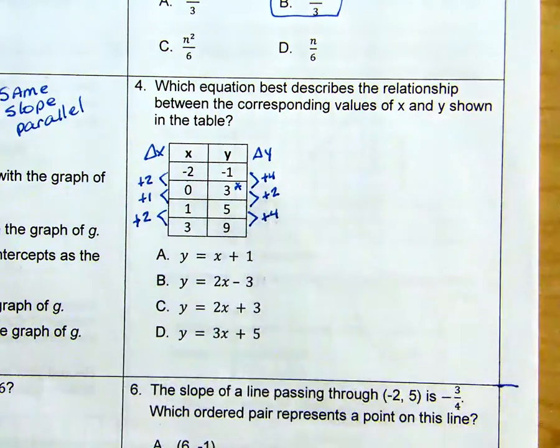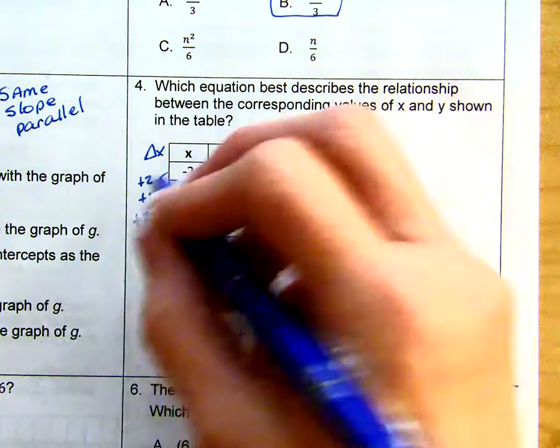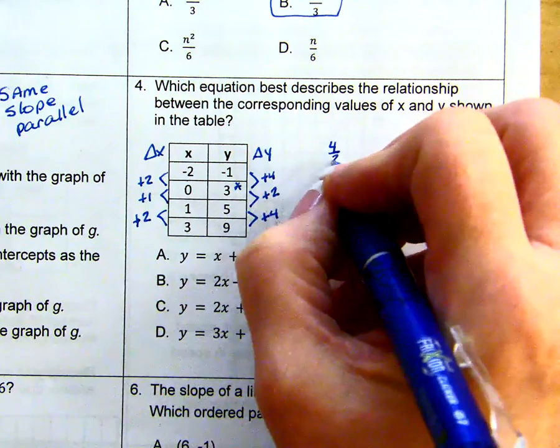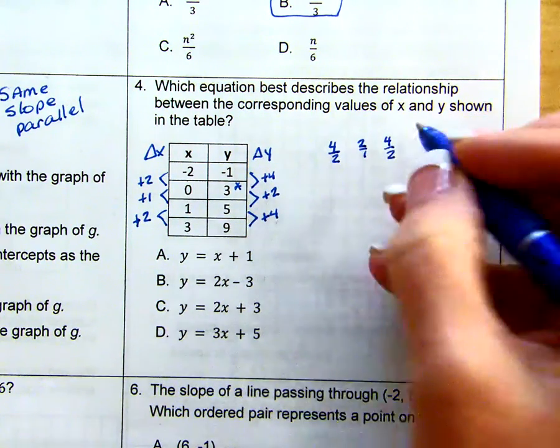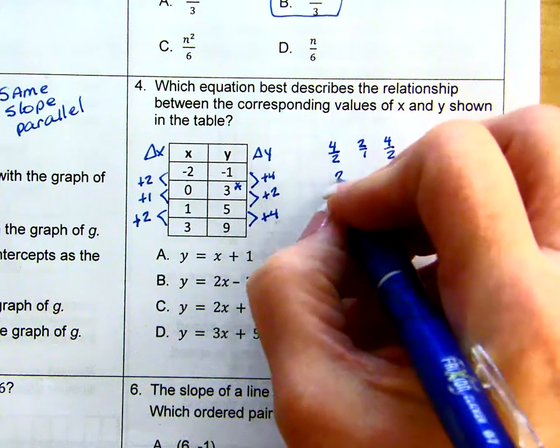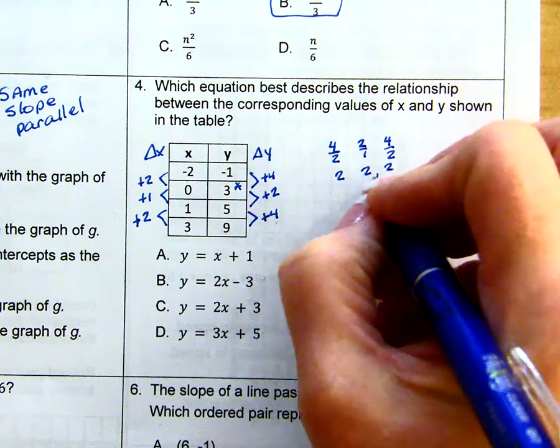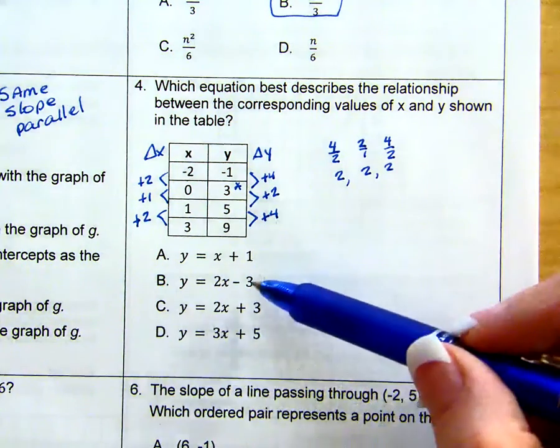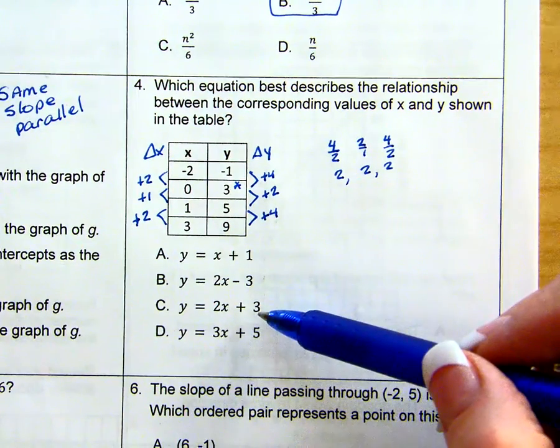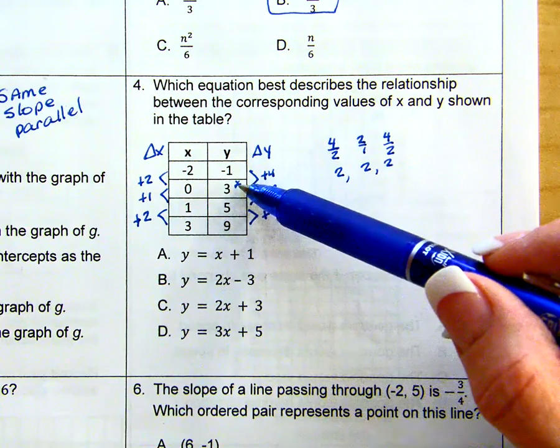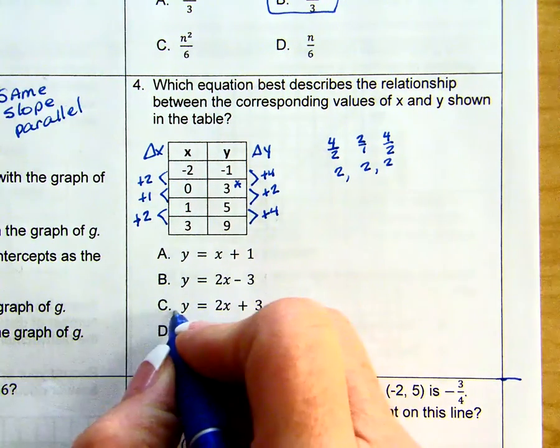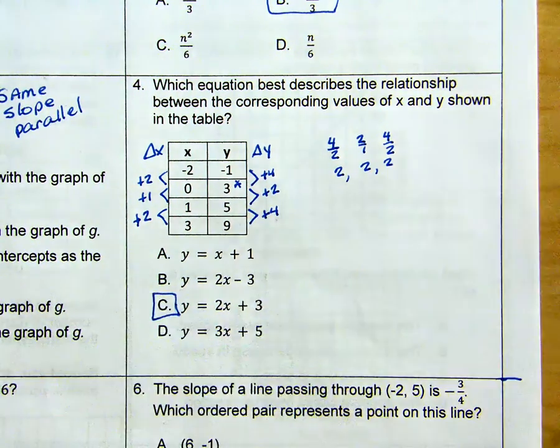So our change in y over change in x, we have 4 over 2, 2 over 1, and 4 over 2. All of these will reduce to be 2. So we know we have a slope of 2. So it's either b or c. So we look at the y-intercept that we saw from the table and see that that's a positive 3. So our answer choice is c.